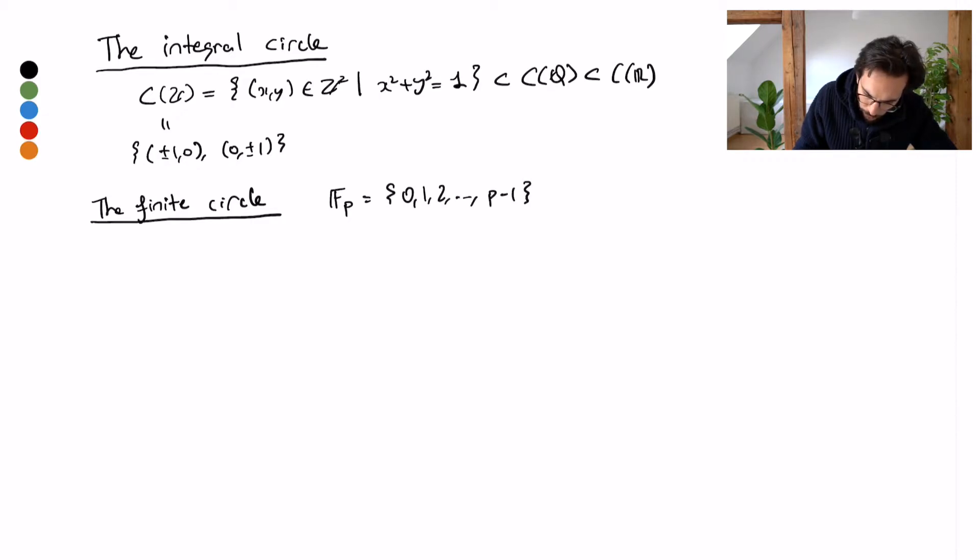Which consists of the residue classes of zero through p minus one, for instance. And I'm solving for C of F_p, which consists of x and y in F_p such that x squared plus y squared equals one.